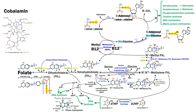SAH is converted back to homocysteine by adenosylhomocysteinase, completing the cycle. There are some negative feedback mechanisms to try and prevent accumulation of methylfolate, including inhibition of serine hydroxymethyltransferase by methylfolate, as well as inhibition of MTHFR by SAM.